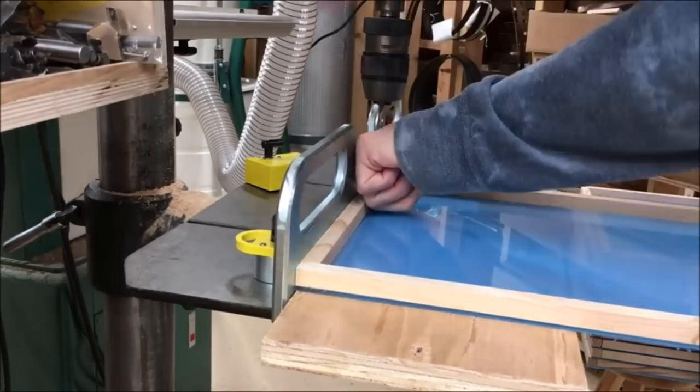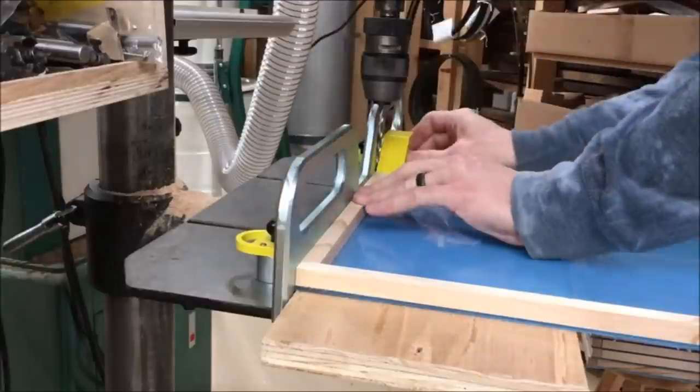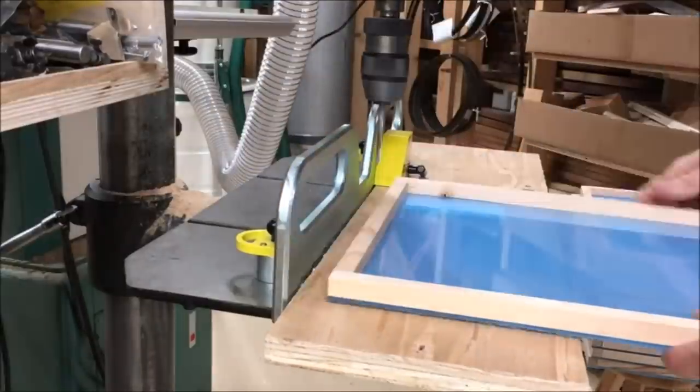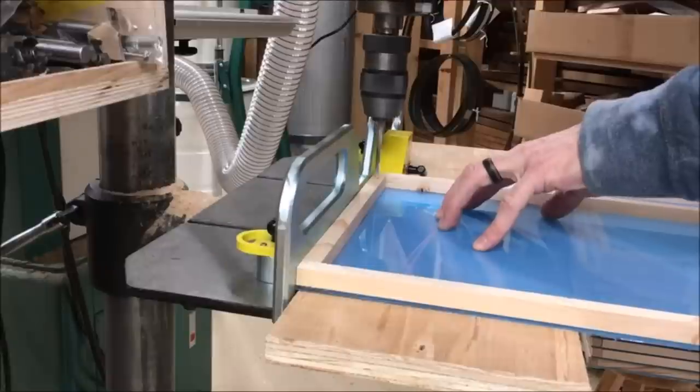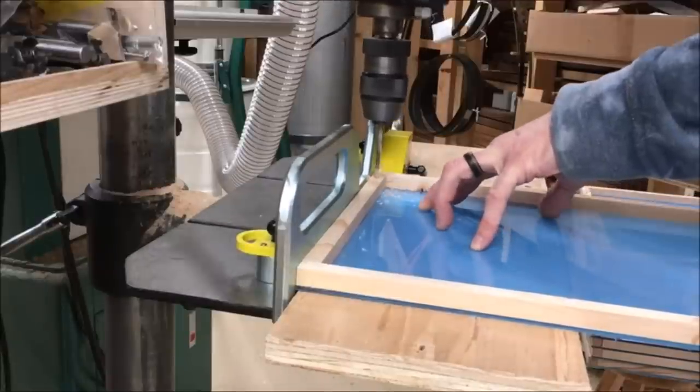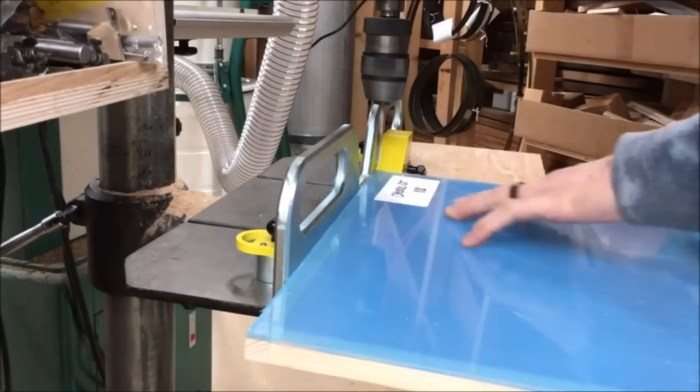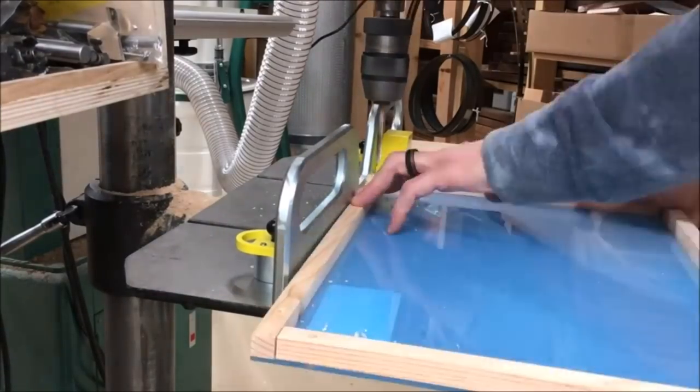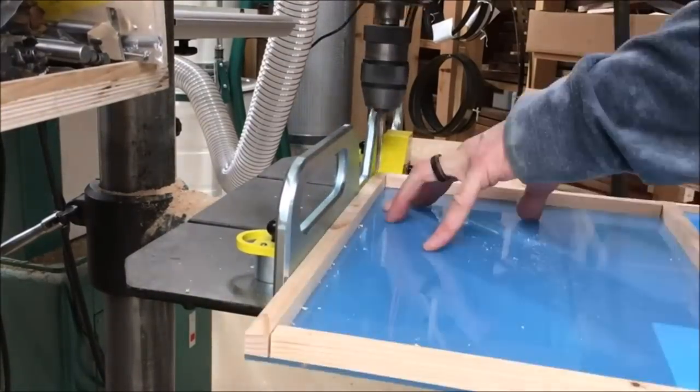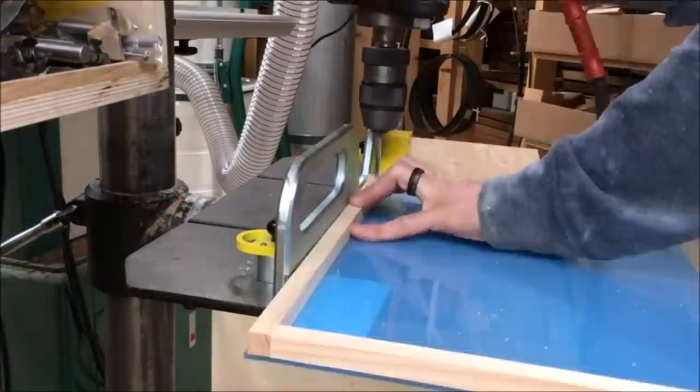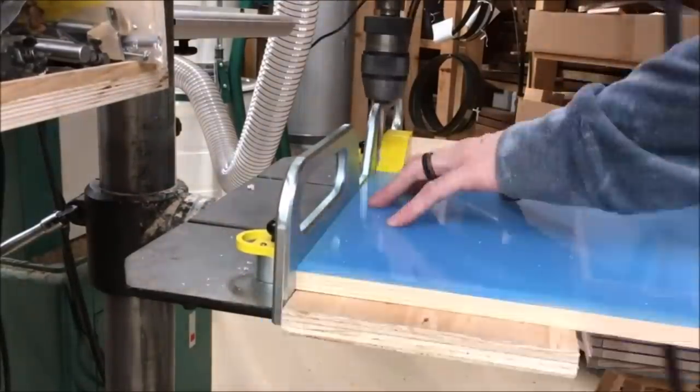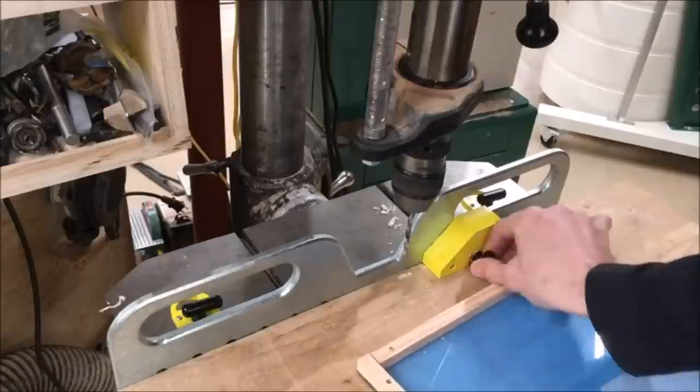MagSwitch 13x2.5-inch Drill Press Fence with Stop Block, adjustable fence for drill presses. Powerful magnets allow quick positioning and fine adjustment of the fence and make it easy to remove and store when a fence is not needed. Magnets can be positioned at different points on the fence for optimal placement on drill press tables.